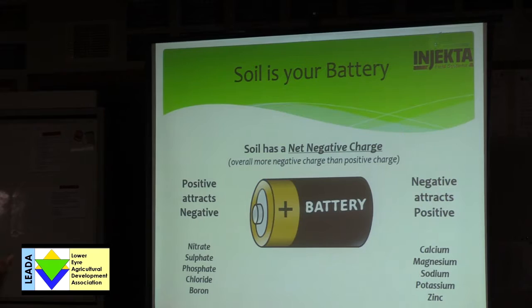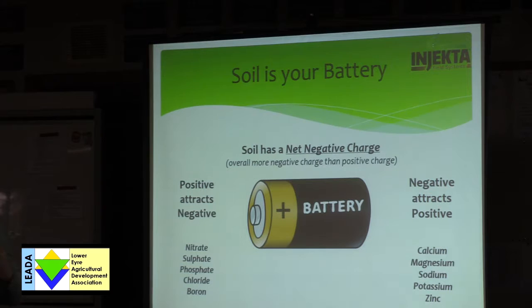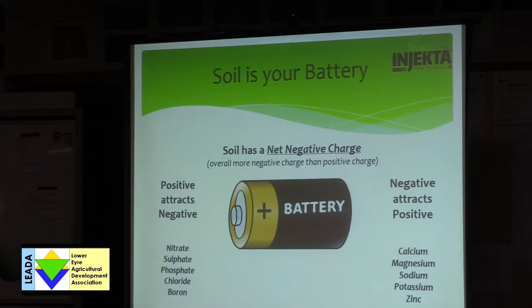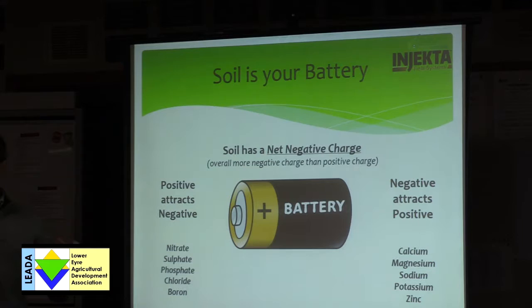Soil has a net negative charge — overall it's got more negative charge sites than positive. So it retains both positive and negative nutrients. Within a soil test, you'll be testing positively charged nutrients — your cations: calcium, magnesium, sodium, potassium — and then negatively charged nutrients such as nitrate, sulphate, and boron. These are negatively charged and that's why they leach through. It's not just that they're mobile; it's because negative doesn't like attracting to negative — negative needs a positive to retain it there.